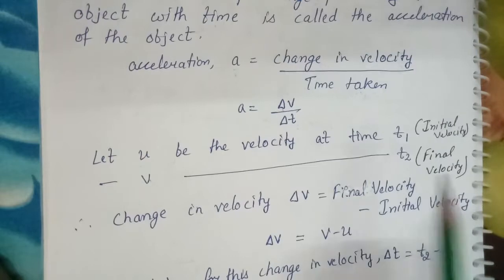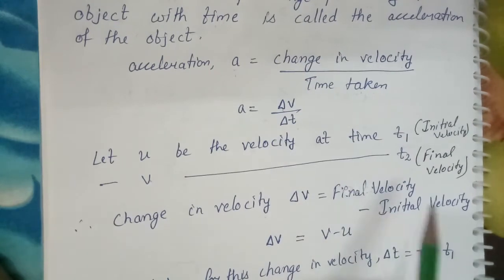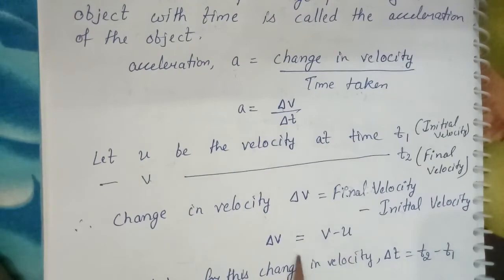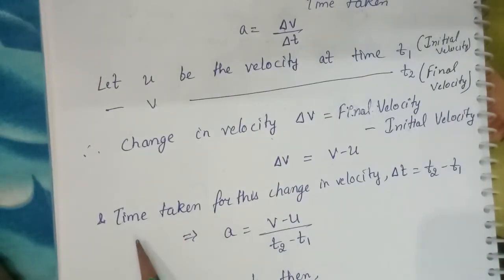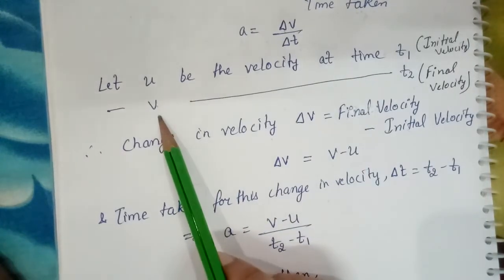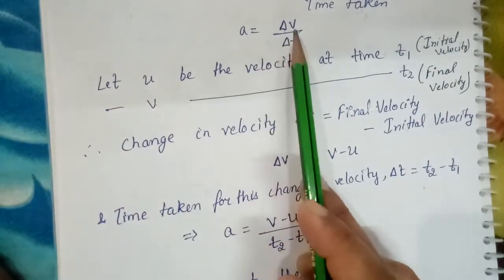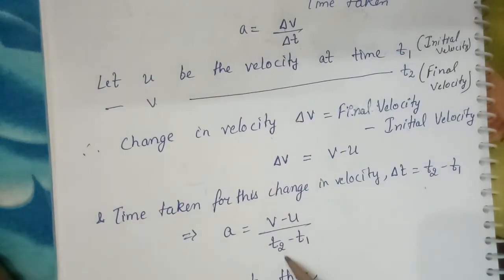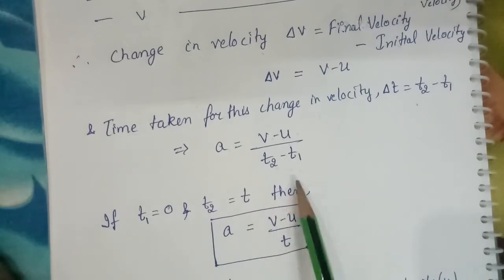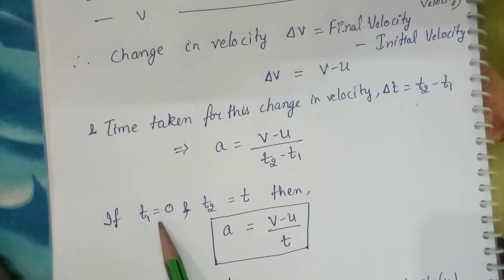Then at time T2, we consider the velocity to be V, and we represent this as the final velocity. So to find the change in velocity — how much the velocity changed — you subtract the initial velocity from the final, which gives V minus U. Similarly, the time taken for this change in velocity: at time T1 the velocity was U and at time T2 the velocity is V, so time taken is T2 minus T1, which gives ΔT. So the formula for acceleration becomes: (V − U) / (T2 − T1), that is change in velocity upon time taken.